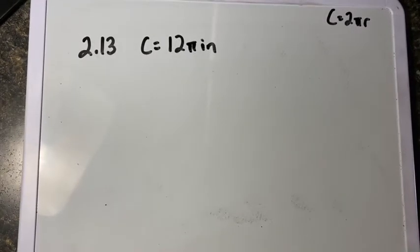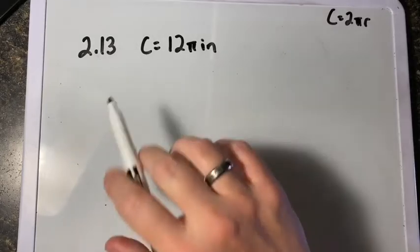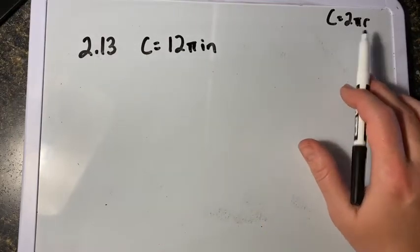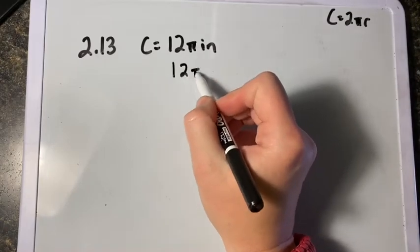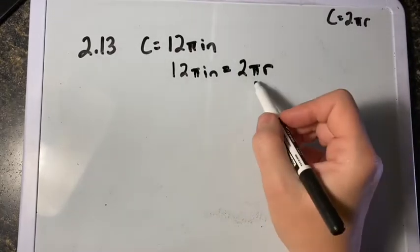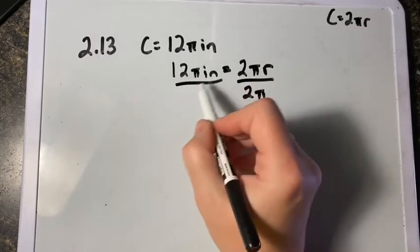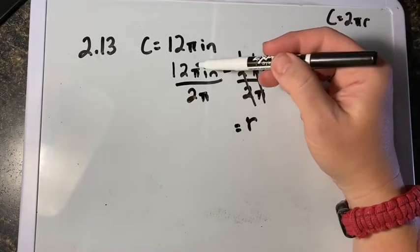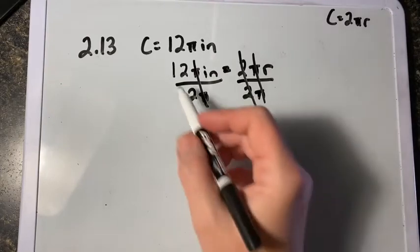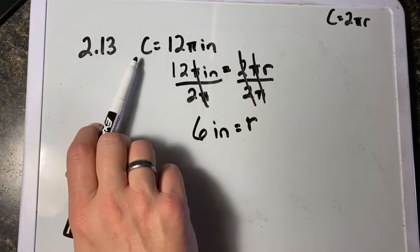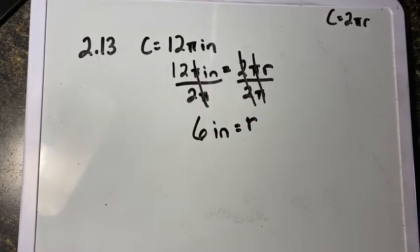Problem 13 asks us to find the radius if we're given a circumference — so we're working backwards. We're told the circumference equals 12π inches and we want to solve for the radius. We know 12π equals 2πr. Dividing both sides by 2π, the π's cancel, and 12 divided by 2 gives us a radius of 6 inches.